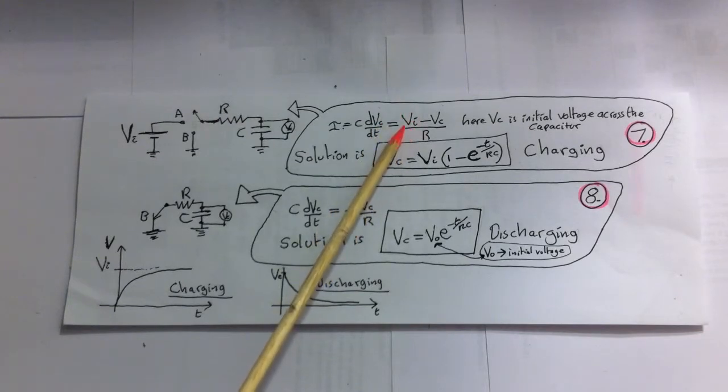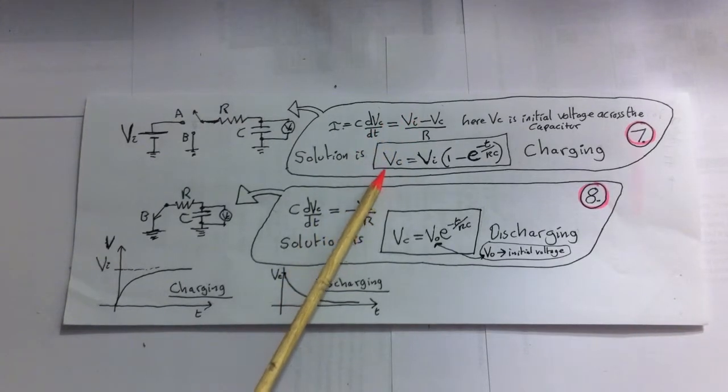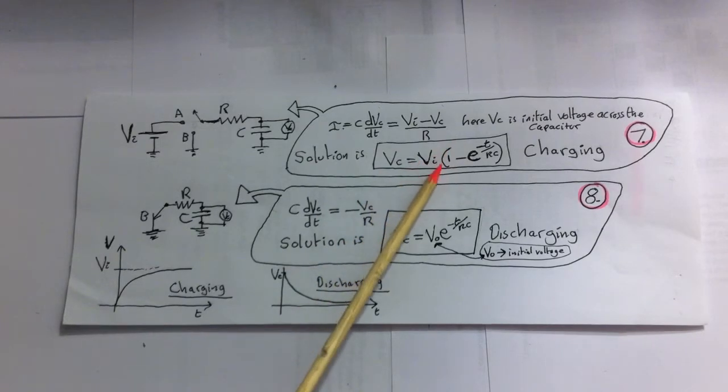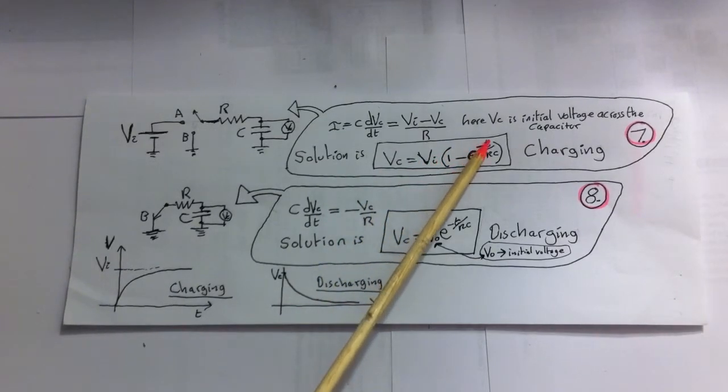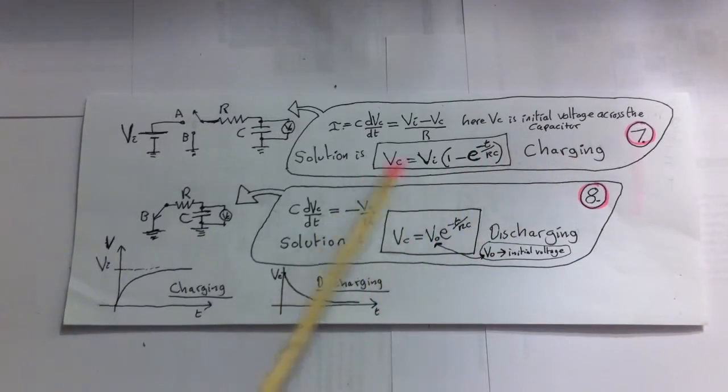Now that's a differential equation. The solution to that is this. VC equals VI brackets one minus E to the exponential T over RC. And that's the equation for a charging capacitor for this circuit.